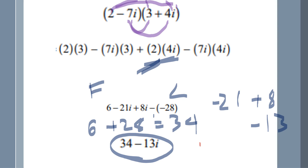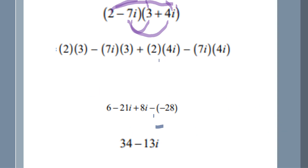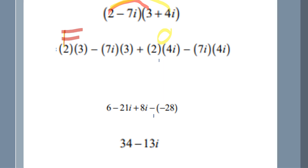I know I put the FOIL terms in different places, but the order doesn't really matter here because we still get the same thing. Don't forget to pause the video if you need help. So first: 2 times 3 is 6. Outer: 2 times 4i is 8i. Inner: negative 7i times 3. Last: negative 7i times 4i. The O and I parts just got switched backwards but it really doesn't matter.